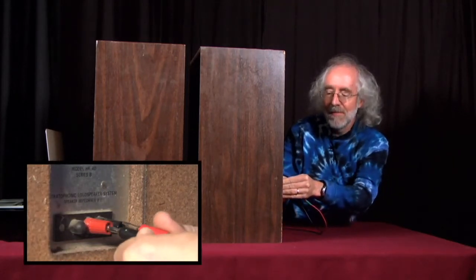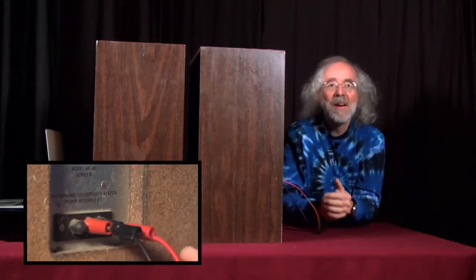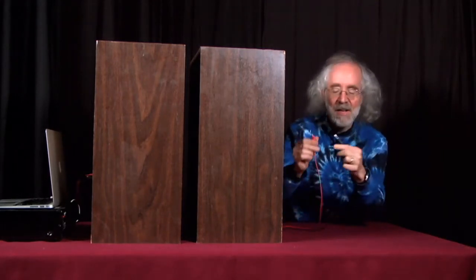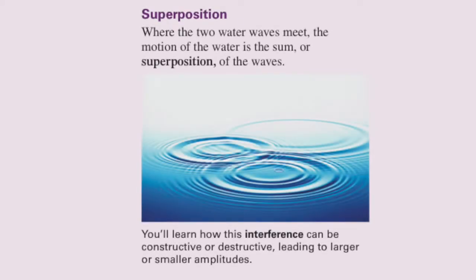A lot quieter. So I'm going to take this speaker and unplug it — I'm removing sound from the system — and when I do that, it's louder. Or another way to look at it: if I take this system and add sound to it, I've made it quieter. How can adding sound to a system make it quieter? That has to do with something called superposition and interference, topics we'll talk about in this segment.